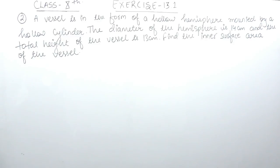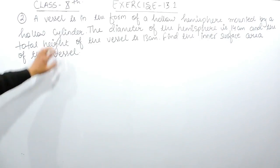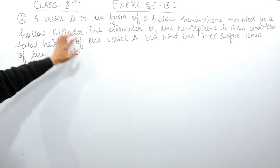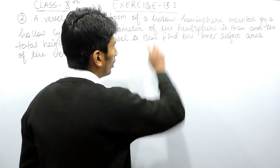The diameter of the hemisphere is 14 centimeters and the total height of the vessel is 13 centimeters. You have to find the inner surface area of the vessel. There is a vessel which is formed of a hollow hemisphere.